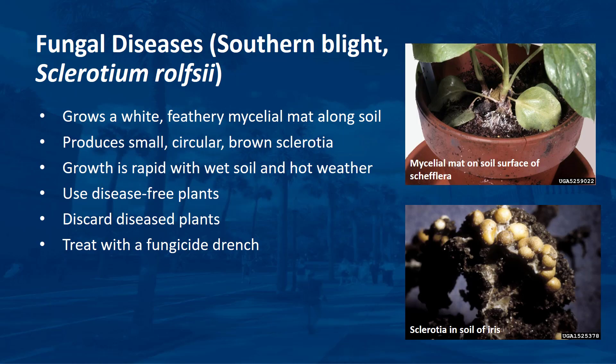The southern blight pathogen grows as a white, feathery mycelial mat along the soil surface and on plant parts — in contrast to Rhizoctonia, which always produces brown-colored mycelia. The mycelia eventually form small, circular brown sclerotia that resist penetration by fungicides. Growth of this fungus is especially rapid when soils are wet and weather is hot. Southern blight is common in warm climates. Use disease-free plants to exclude fungal access. Plants showing disease symptoms should be discarded and the rest treated with a fungicide drench. Effective fungicides include strobilurins and fludioxinil.